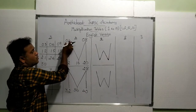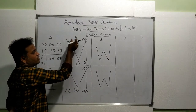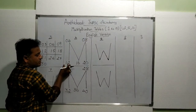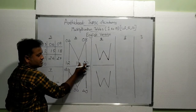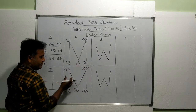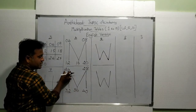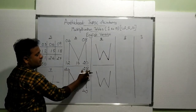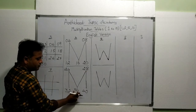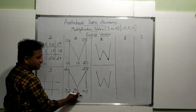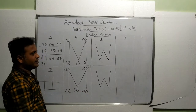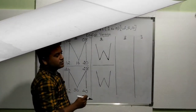Now read it like this: 1 four is 4, 4 twos are 8, 4 threes are 12, 4 fours are 16, 4 fives are 20, 4 sixes are 24, 4 sevens are 28, 4 eights are 32, 4 nines are 36, and 4 tens are 40. Very easy!